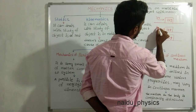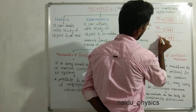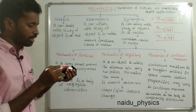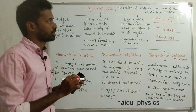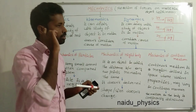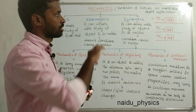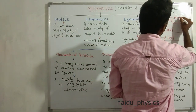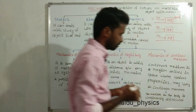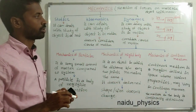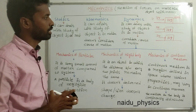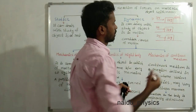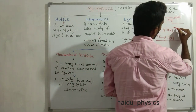In case 1, we applied 3 N force on the 3 kg mass, but the 3 kg mass does not move — it is in a rest position. By applying 3 N force on the 2 kg and 1 kg mass objects, these two objects are moving — they are in motion.